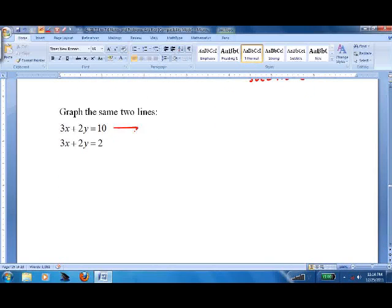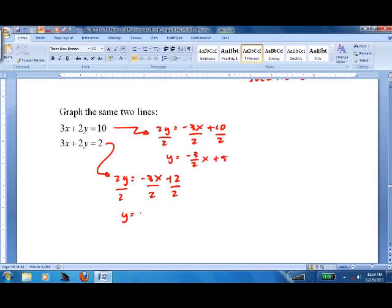And let's graph it. In order to do that, we've got to make some changes. So, 2y equals negative 3x plus 10 divided by 2. Y equals negative 3 halves x plus 5. Y equals negative 3 halves x plus 1. Here's my two equations. Let's put them up on a graph.